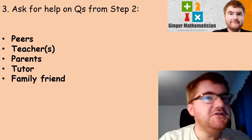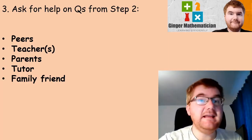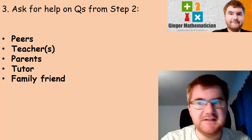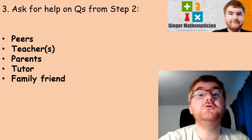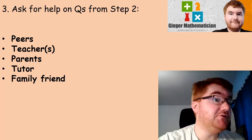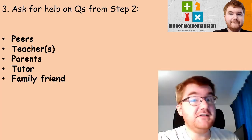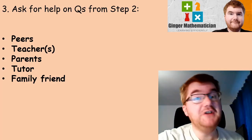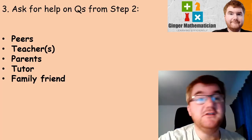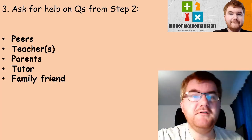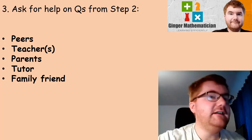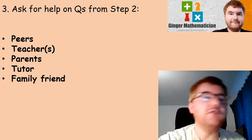Once you've done step two, the key part here is to ask for help on the questions that you don't understand. There are many people you can talk to in order to get clarification. The first people to talk to are actually your peers — your friends in class who are also doing the IGCSE course with you. This also includes people in the grades above, like grade 11, grade 12, or year 12 and year 13, who have been through exactly this process and have really fresh, up-to-date knowledge of how to answer these questions.